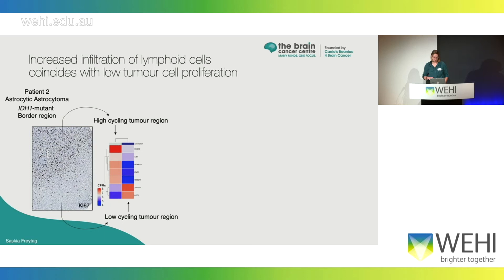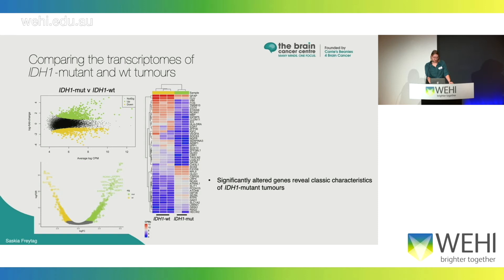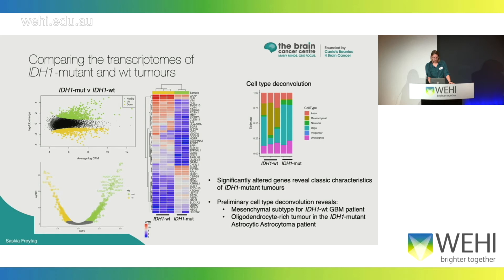In the region with increased cell cycling, there were more endothelial cells as expected. Investigating the transcriptome of the highly cycling and lowly cycling tumour cells, we found that in the highly cycling tumour region there was high expression of histone coding genes, but also genes involved in neurogenesis and regeneration. Looking across all tumour cell samples of the Ki67 positive and negative regions consistently validated that we were getting markers of highly cycling cells. We could also use the tumour cell data to identify transcriptomic differences between IDH1 mutant and wild type tumours, revealing the glioblastoma patient had a predominantly mesenchymal subtype whereas the IDH1 mutant patient had more oligodendrocyte-rich tumours.